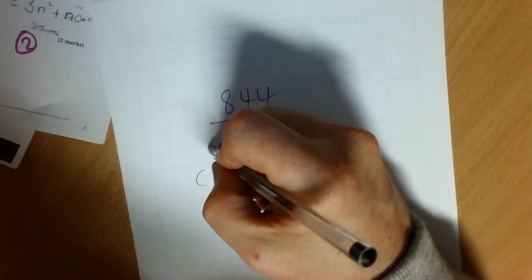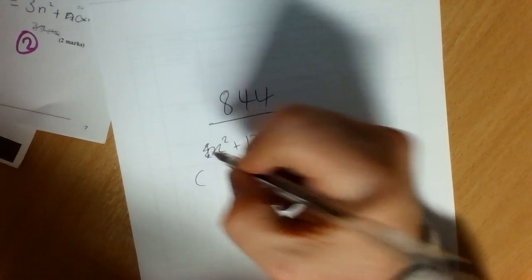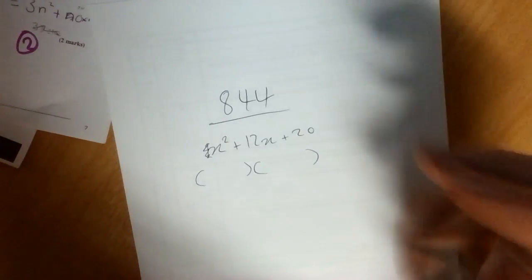Miss McKeever's method is for when the coefficient of x squared is not a hidden one, but is instead something else like a 2 or a 3 or a negative 5, just something other than 1.